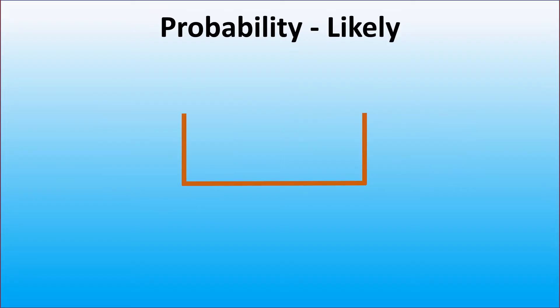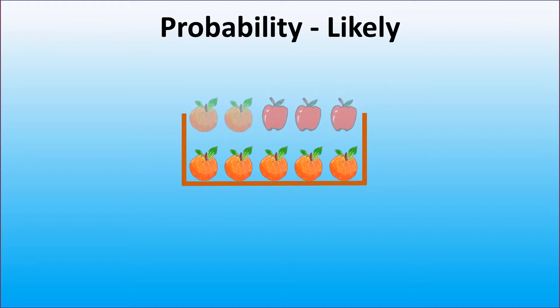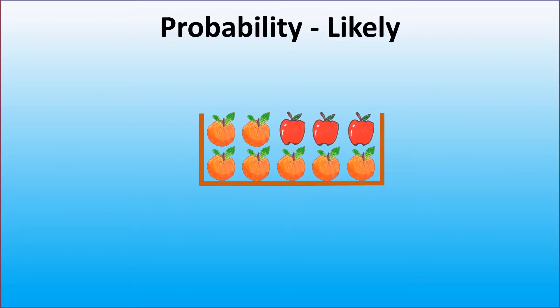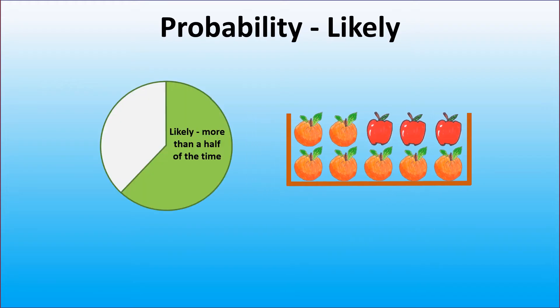What if we have oranges and apples in the box, but we have more oranges than apples? How would we describe the chance of picking an orange from the box in this case? As we have more than half of the box filled with oranges, the event of picking an orange will happen more than half of the time. Thus, the probability of picking an orange is likely.